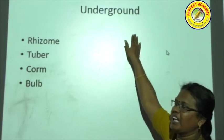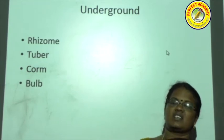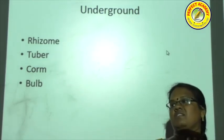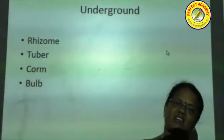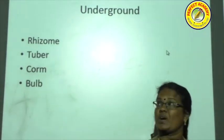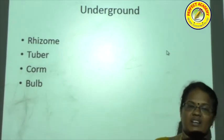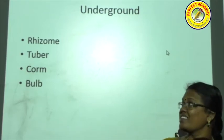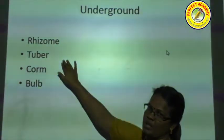The first type of underground stem is the rhizome. Examples are ginger (binomial: Zingiber officinale) and turmeric (Curcuma). Both ginger and turmeric are examples of rhizome-type underground stems.